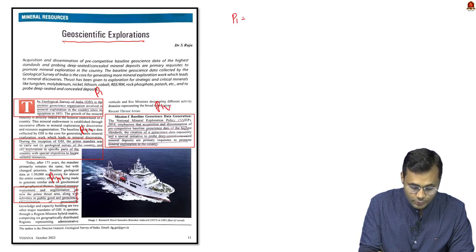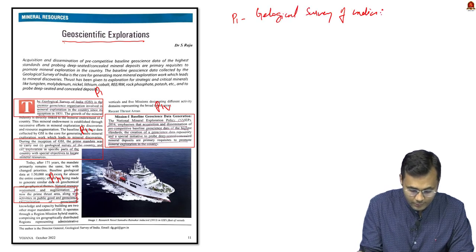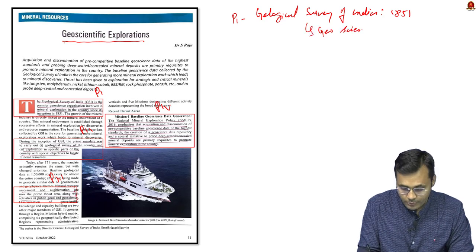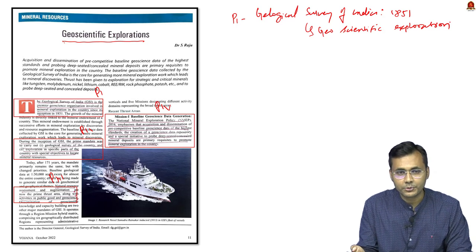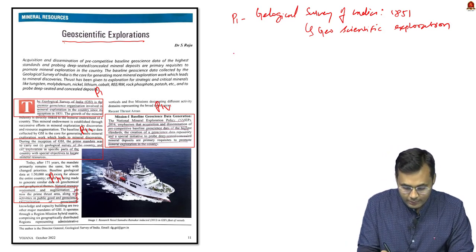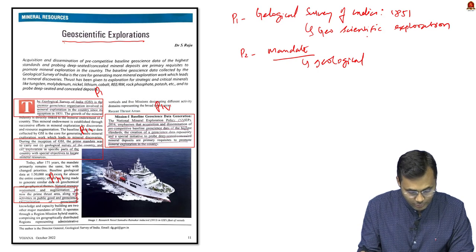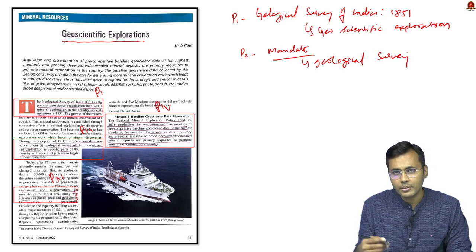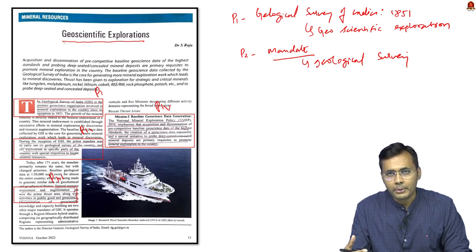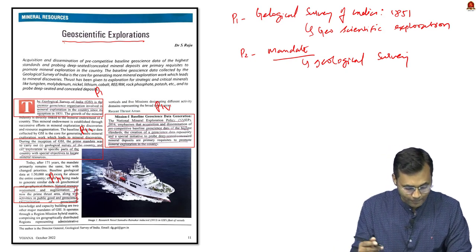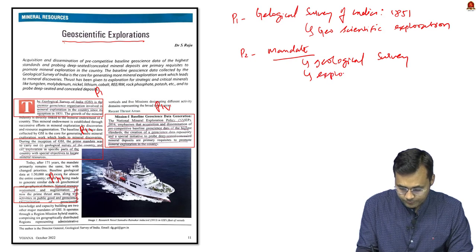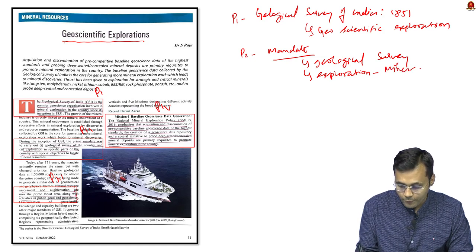Paragraph 1 speaks about the Geological Survey of India, which was established in 1851. They are responsible for geoscientific explorations in India. It was established by the British, and their primary mandate — which is given in paragraph 2 — is their objective. The primary objective is to conduct the geological survey of India, studying the earth, its basic rock types, and focusing on explorations, especially related to minerals.